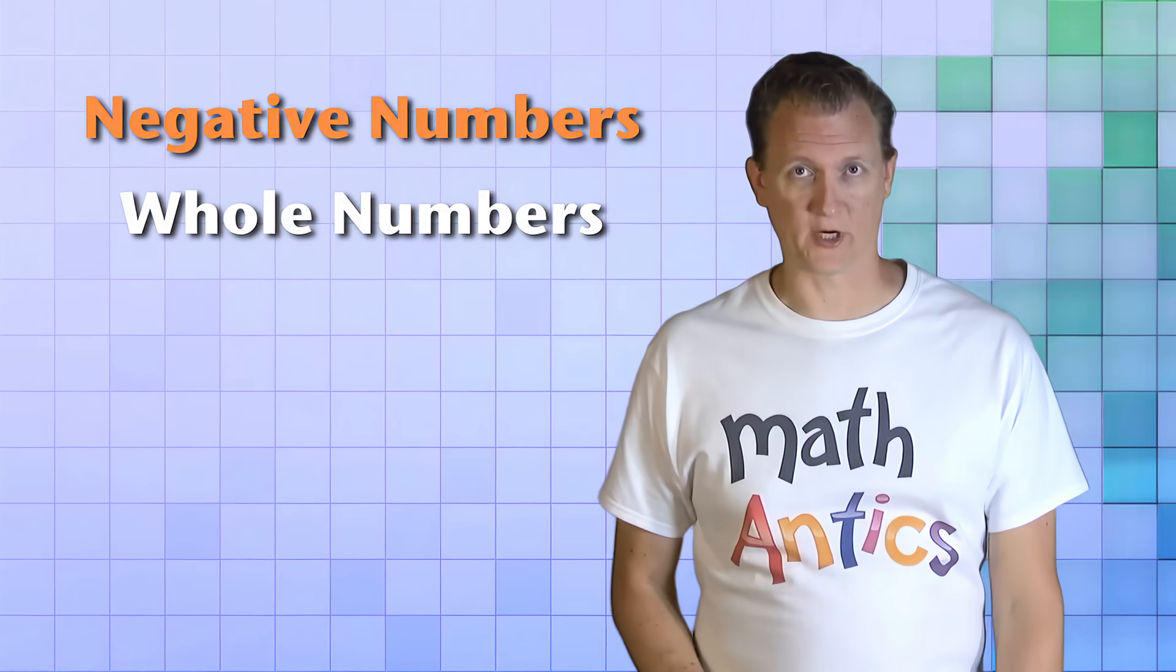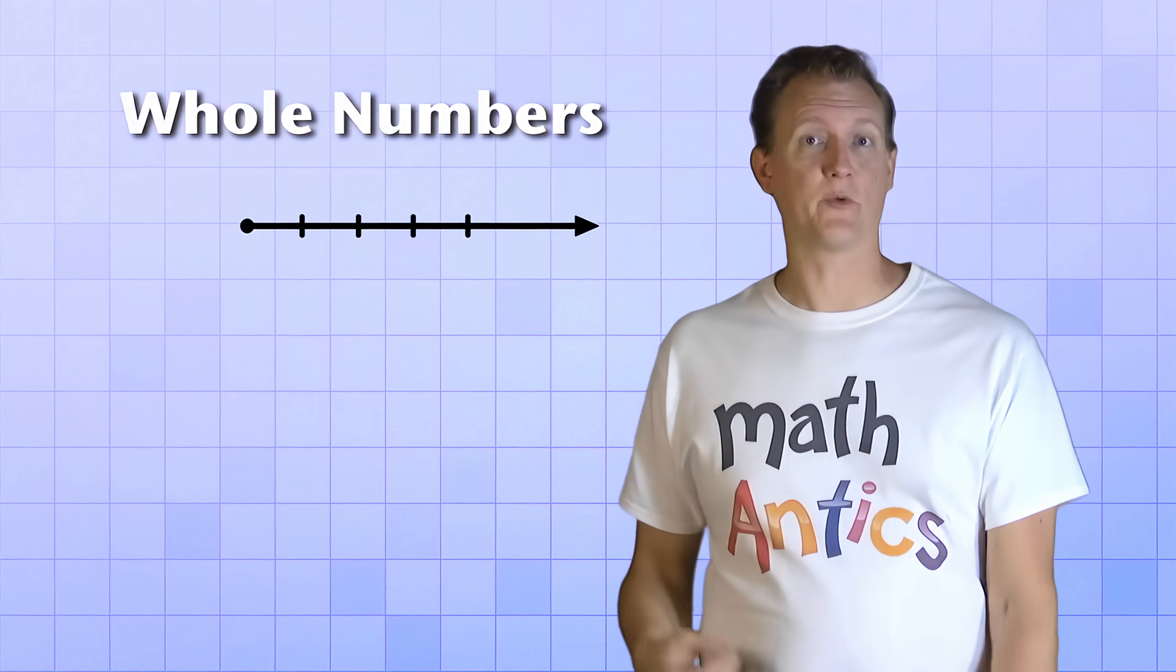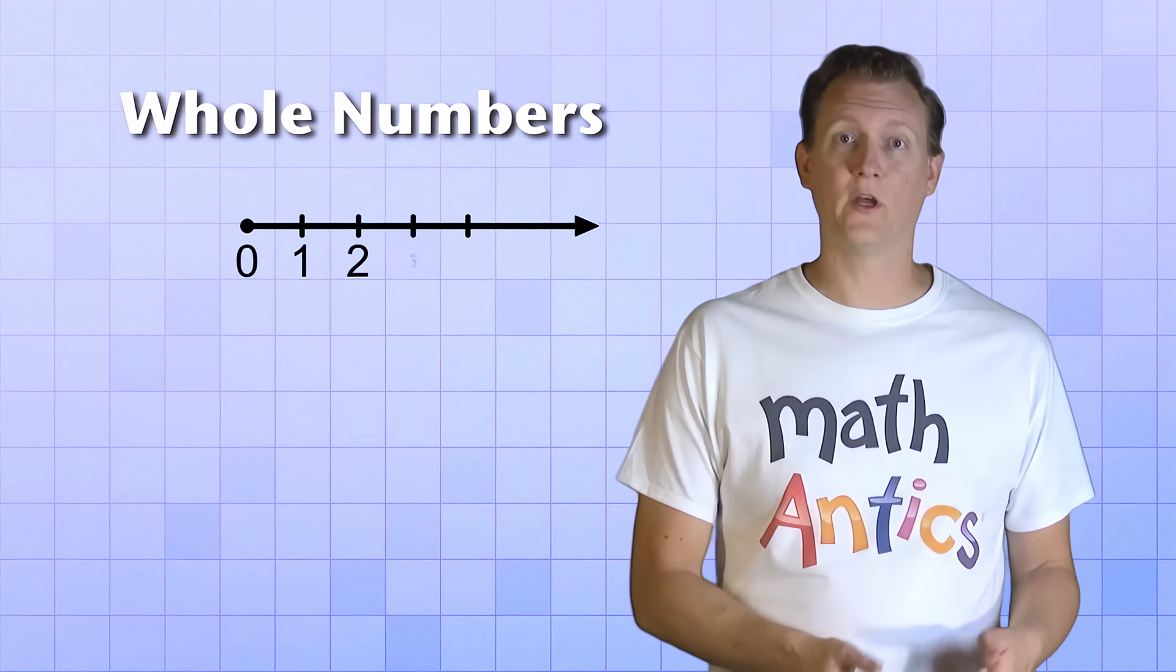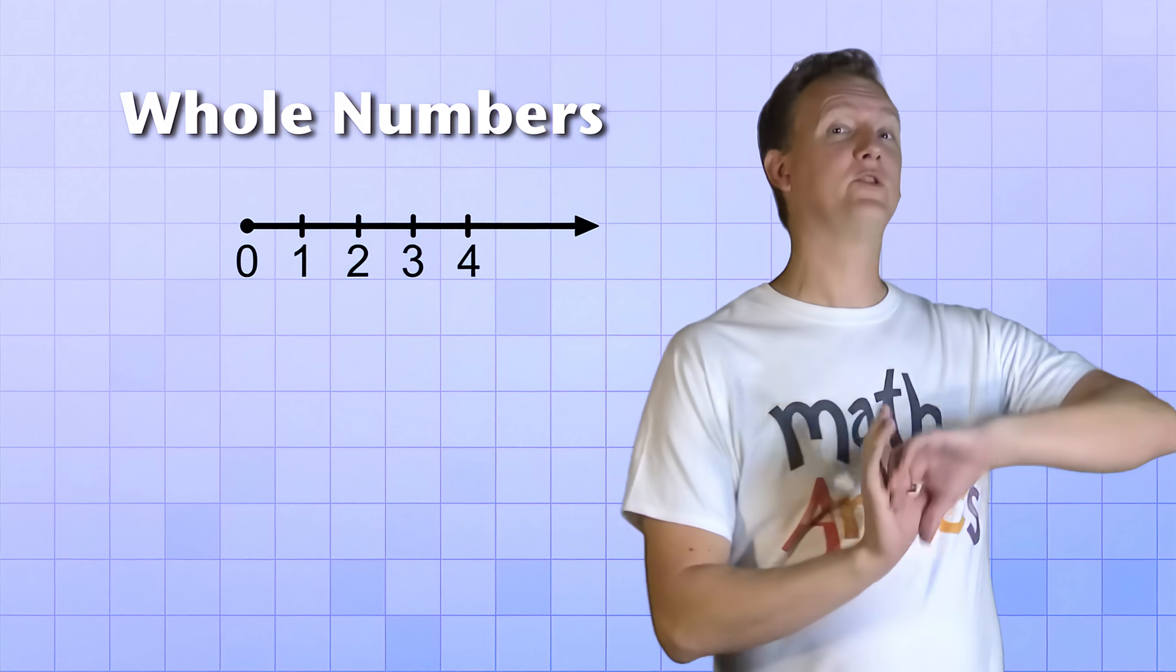You remember what whole numbers are, right? They're the set of numbers on the number line, starting with zero and then counting up one at a time: 1, 2, 3, 4, all the way to infinity.